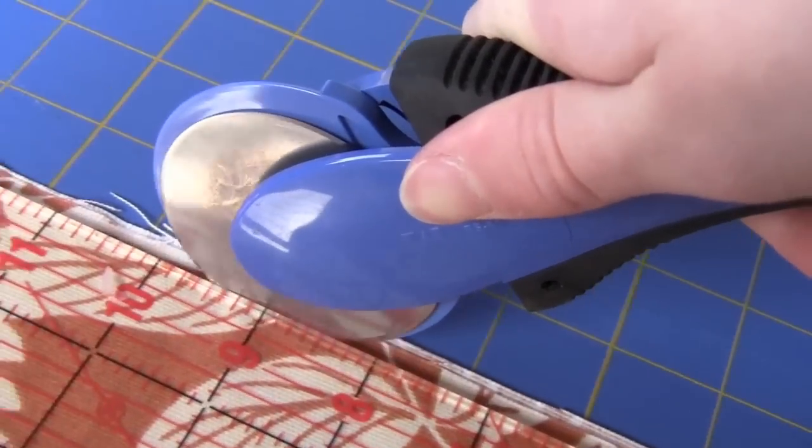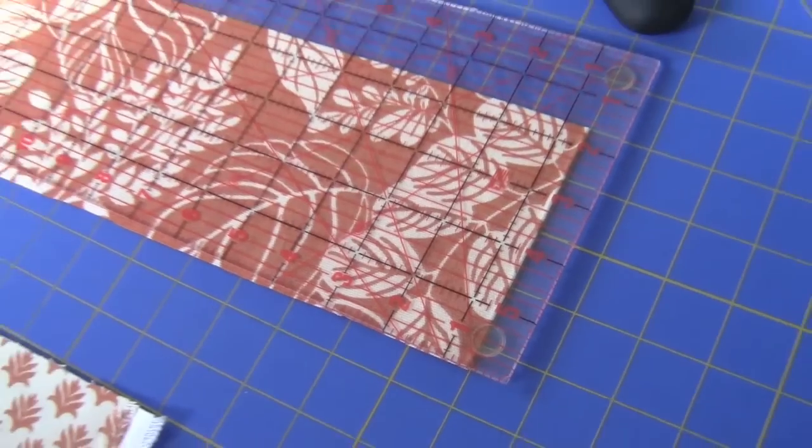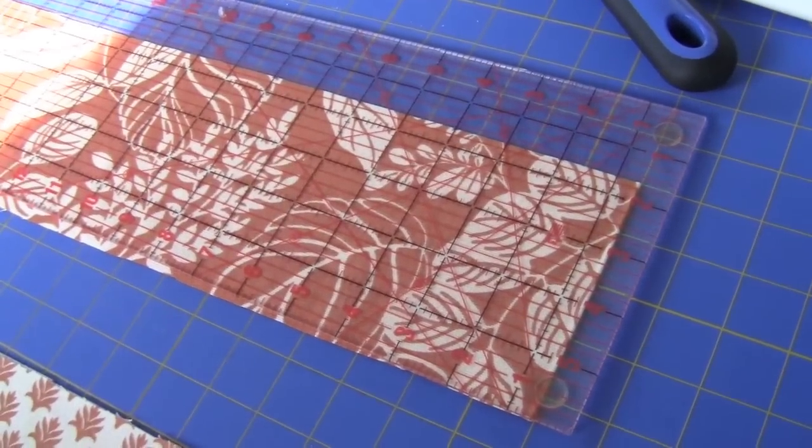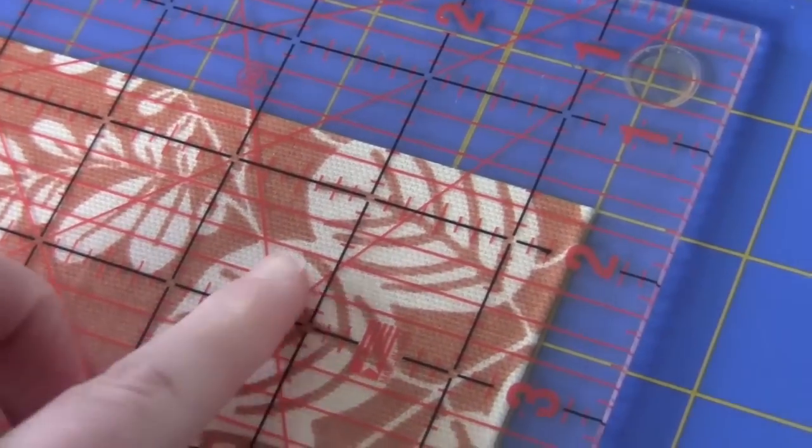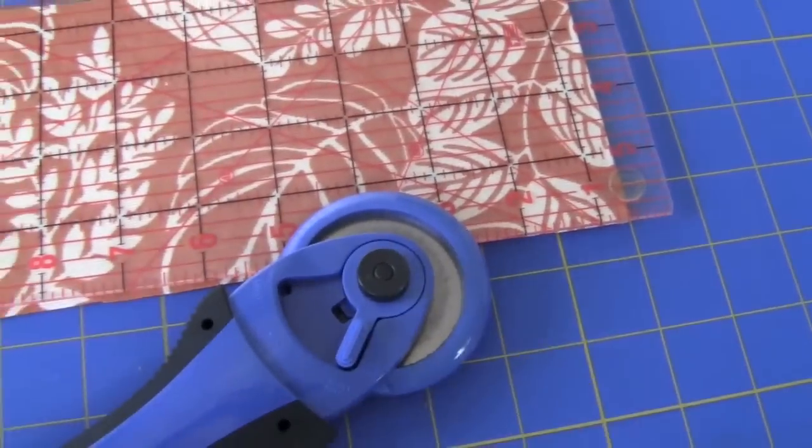And then next, we're going to work on the other side and we're going to cut a straight line on that. This is where you decide the width of your coasters, so cut it whatever width you like. I usually stick around four inches.